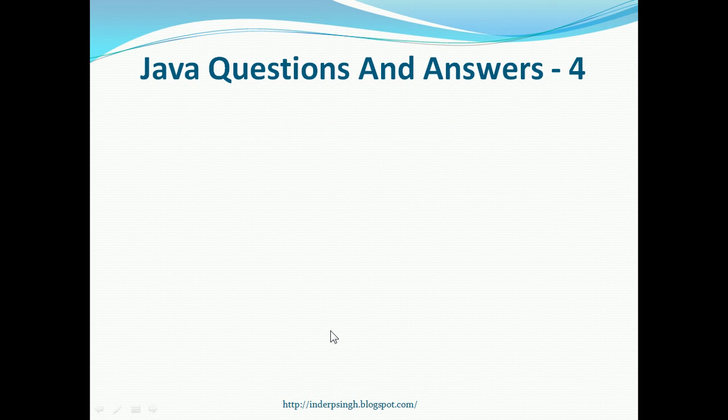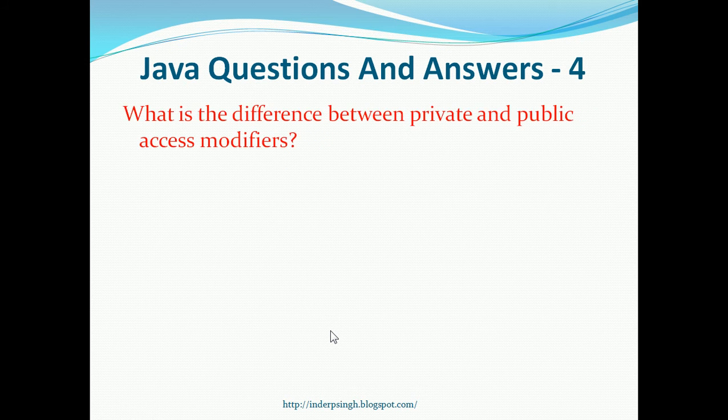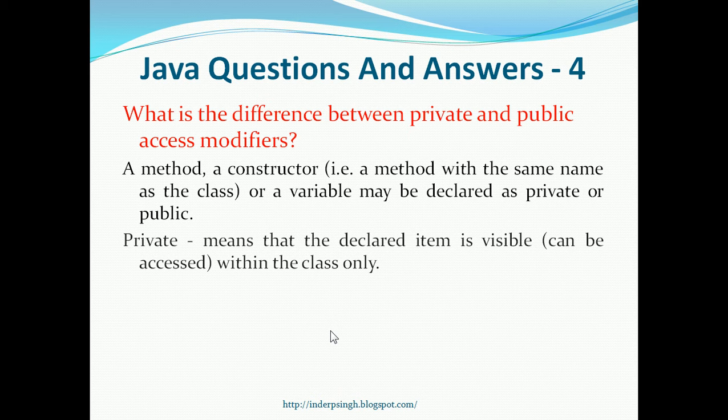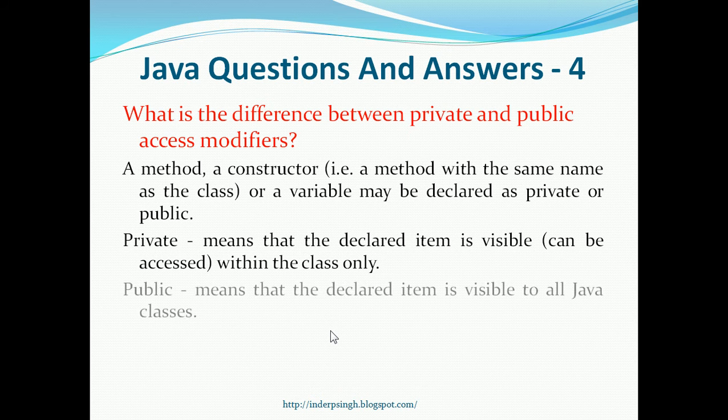Question 4. What is the difference between private and public access modifiers? A method, a constructor, or a variable may be declared as private or public. Private means that the declared item is visible within the class only. Public means that the declared item is visible to all Java classes.